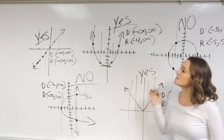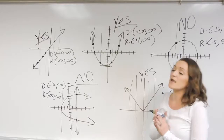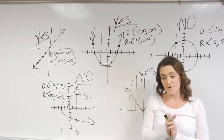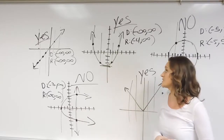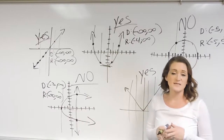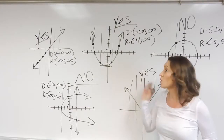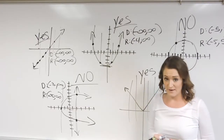That's how you determine if a graph is a function — do the vertical line test. Remember, domain is the span of all your x-values, and range is the span of all your y-values.